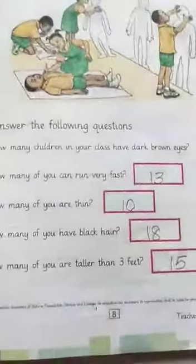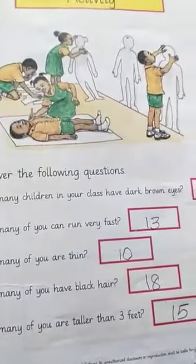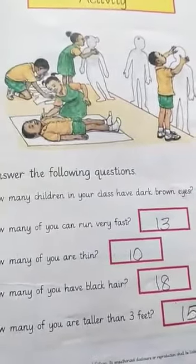Now come to page number eight. Here you can see the children measuring their height and length. Some are tall, some are short. Now answer the following questions — this is a class activity.